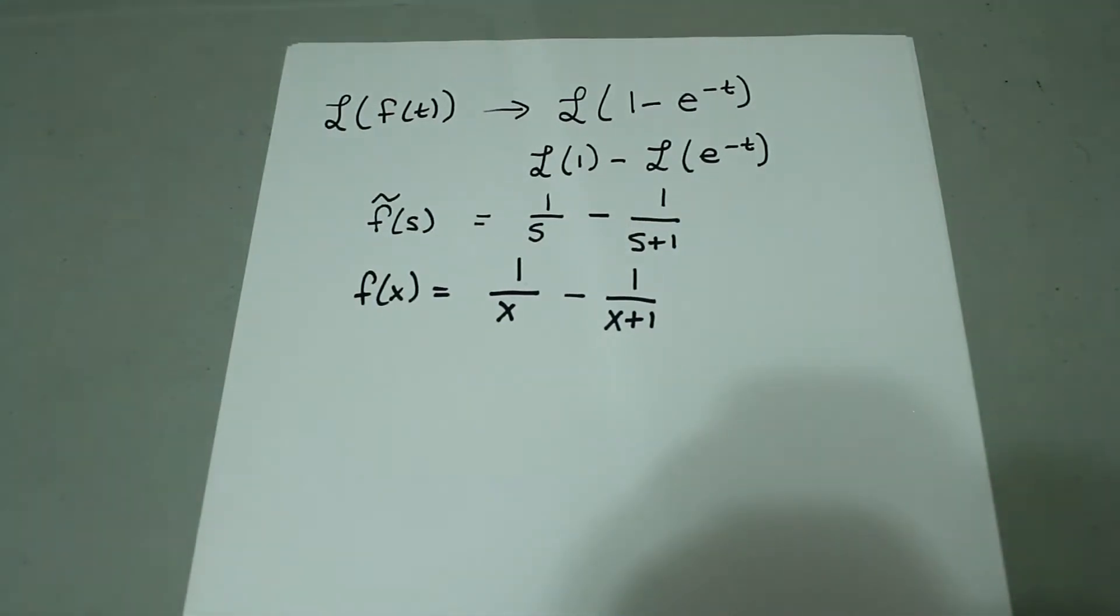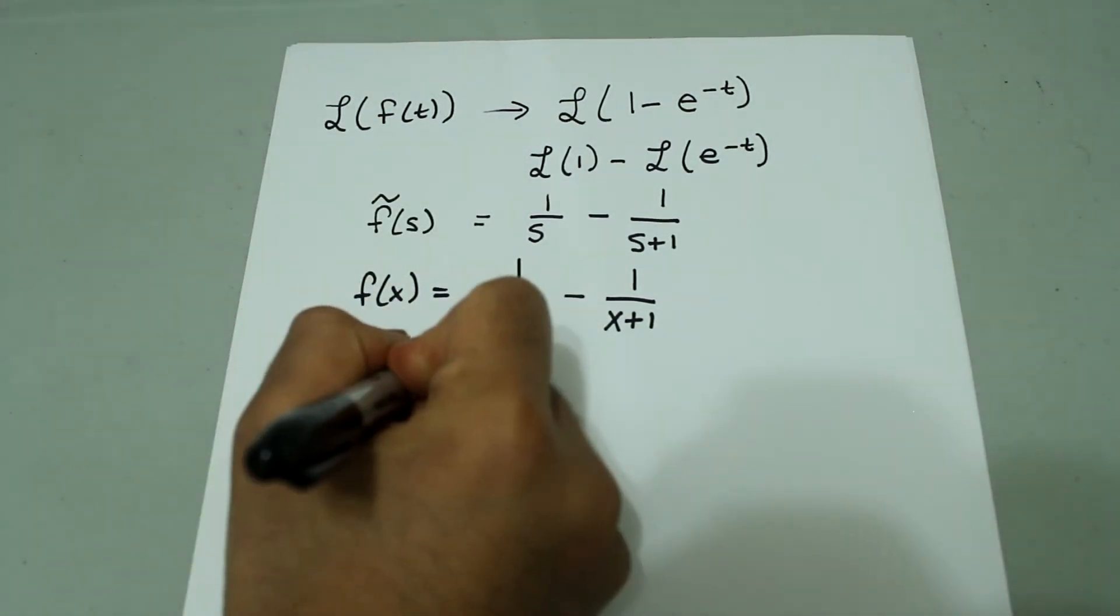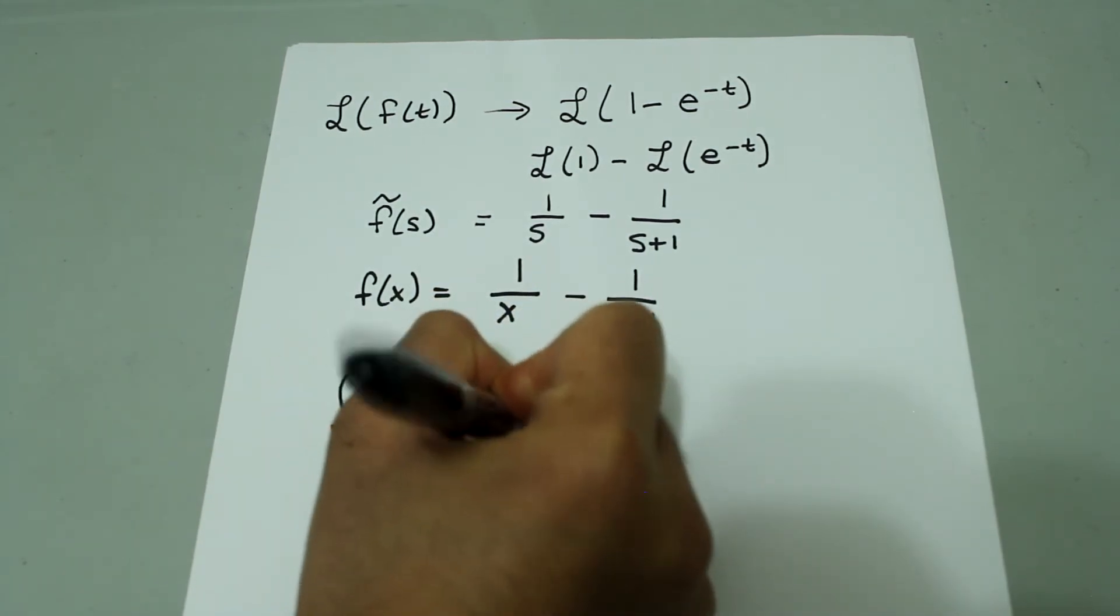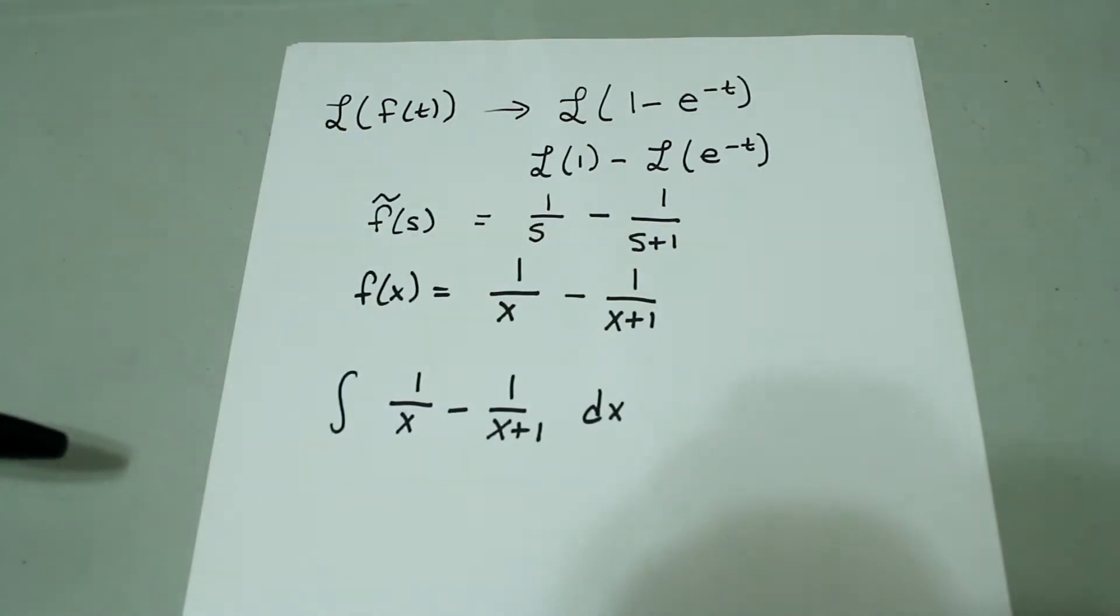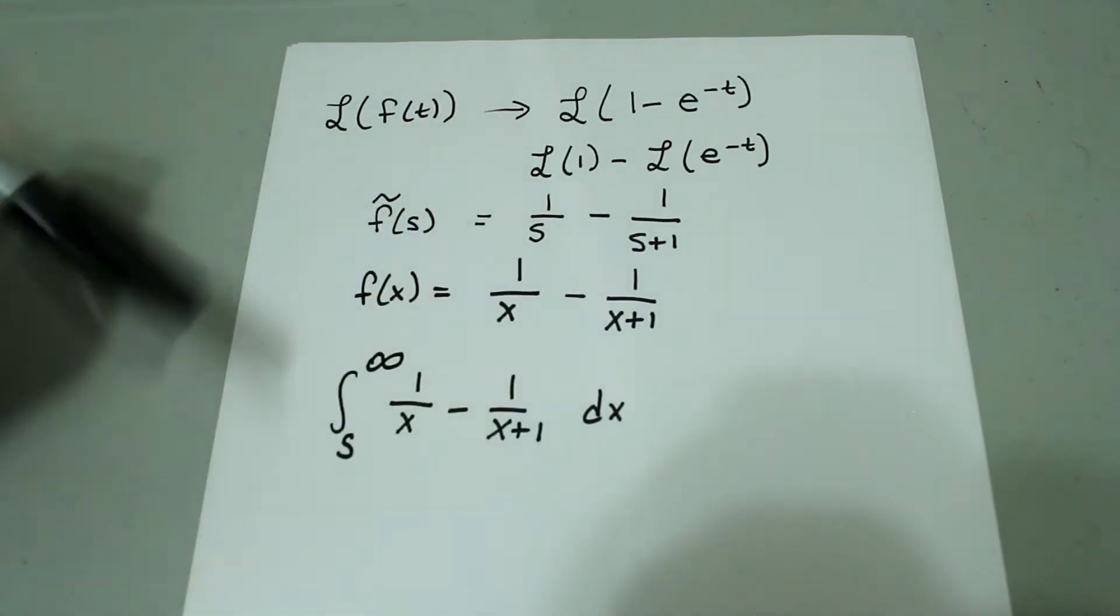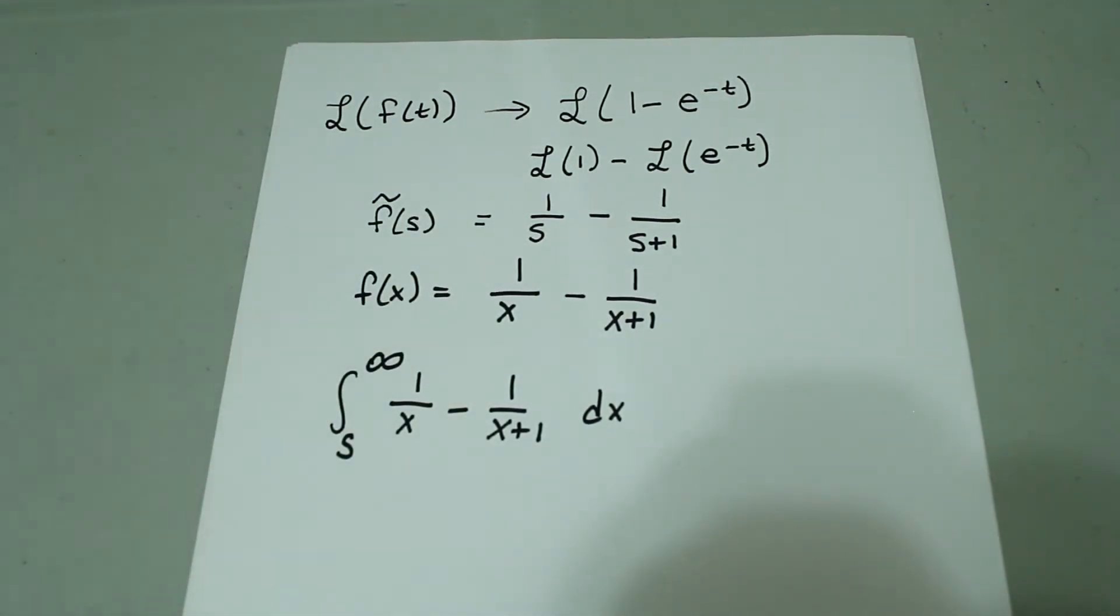Then, we know we're going to have to integrate the Laplace of f of t. So, we're going to integrate this. 1 over x minus 1 over x plus 1 dx. And we're going to integrate from s to infinity. We know we're going to need s's in the final answer since Laplace transforms are in terms of s.